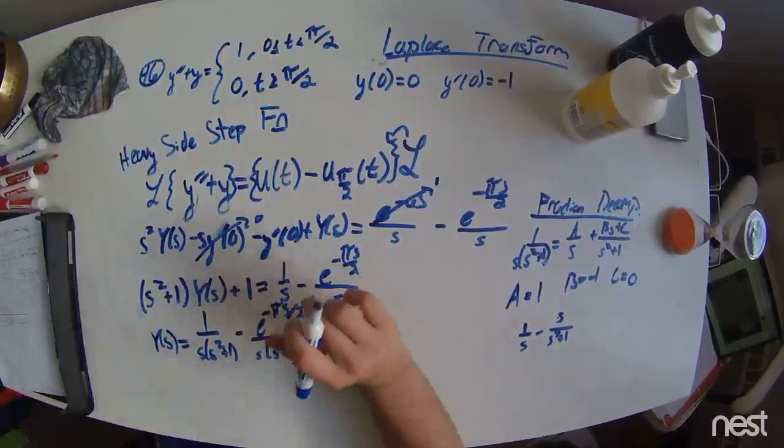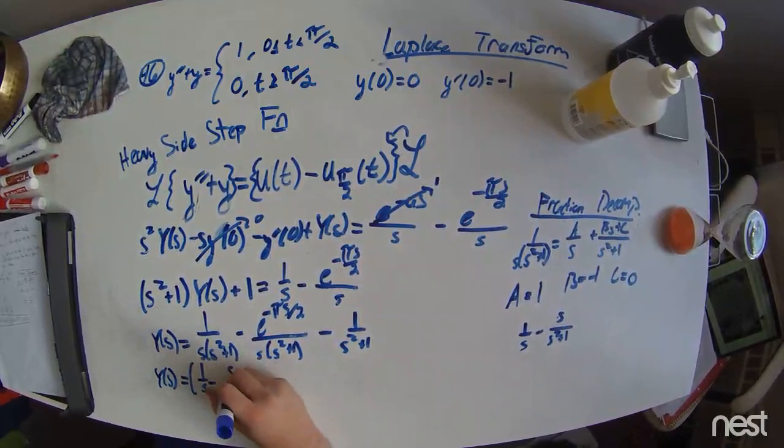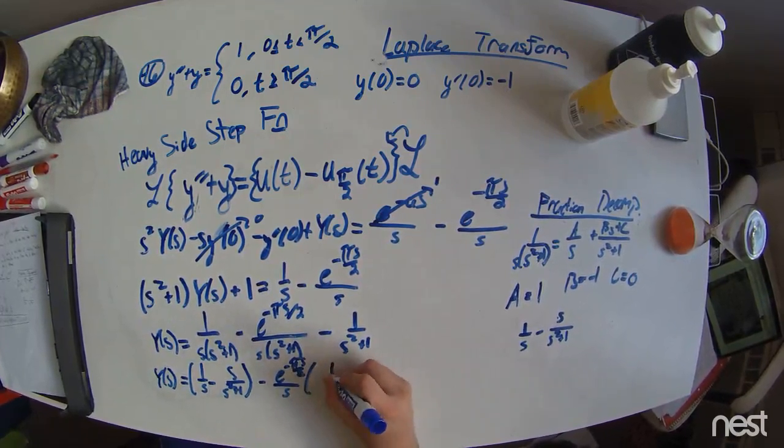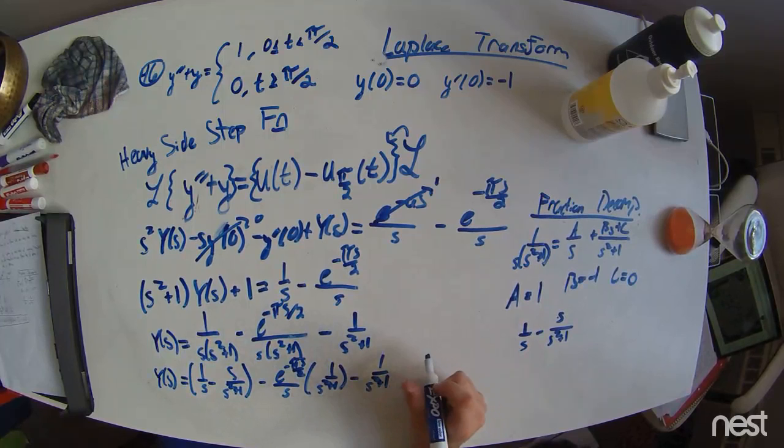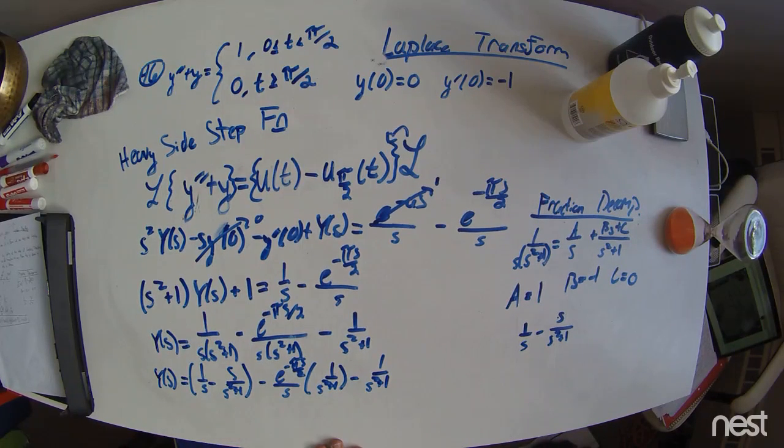Now, rewriting this y of s, that knowledge, we get 1 over s minus s over s squared plus 1 minus e to the pi s over 2 over s times 1 over s squared plus 1 minus 1 over s squared plus 1. That is our Laplace. That is our full expression for y of s. And all these terms we can take the Laplace and the inverse Laplace transform of in order to convert it back to the time domain, the t domain. Because that's all that Laplace transform is. We are transforming from the t domain to the s domain. This is analogous to transform from the time domain to a frequency domain or from position space to momentum space. In order to more readily solve the problem at hand.